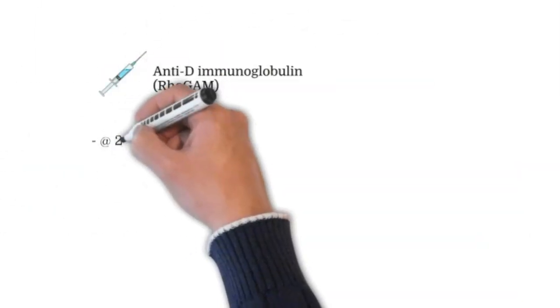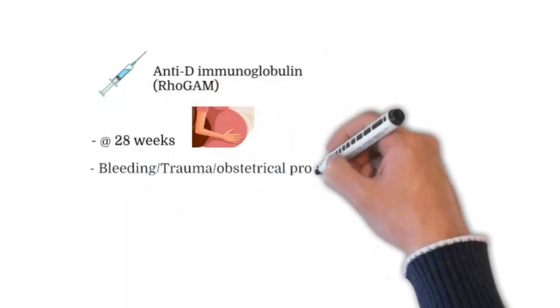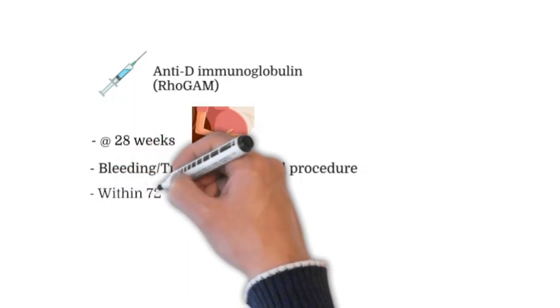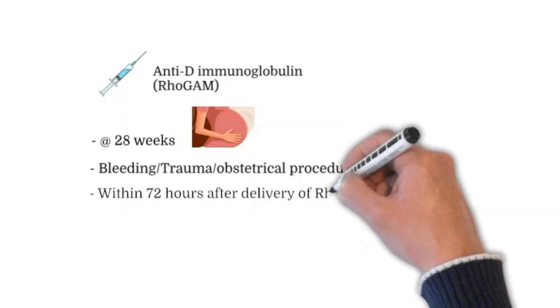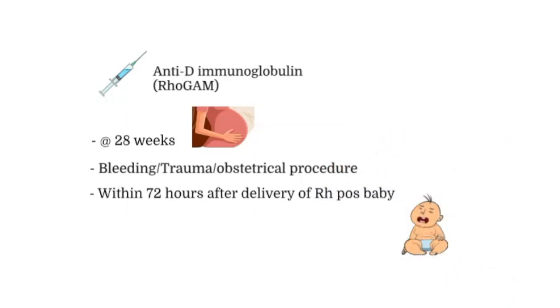RhoGAM is given routinely at 28 weeks of gestation or after bleeding, trauma, or an obstetrical procedure like amniocentesis or external cephalic version. It should also be given within 72 hours of a delivery of an RH positive baby.